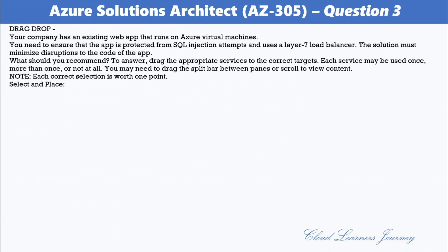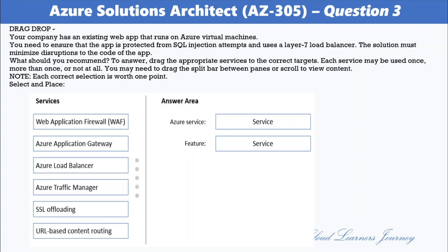Question number three: Your company has an existing web app that runs on Azure virtual machines. You need to ensure that the app is protected from SQL injection attempts and uses a layer 7 load balancer. The solution must minimize disruption to the code of the app. The available services include Web Application Firewall, Azure Application Gateway, Azure Load Balancer, Azure Traffic Manager, SSL offloading, and URL-based content routing.